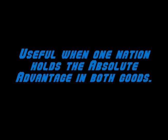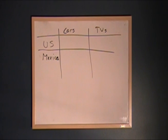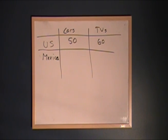We're going to use our two-good, two-country example. In this example, our two countries — the United States and Mexico — produce two goods: cars and TVs. In the United States, one worker can produce 50 cars or 60 TVs. In Mexico, the equivalent worker can produce with the equivalent resources 10 cars or 40 TVs.